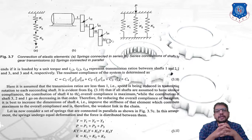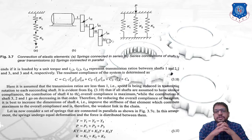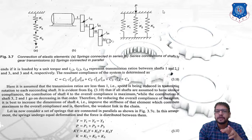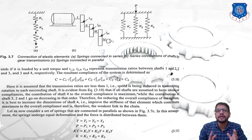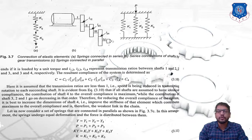Now let's consider diagram C, which represents springs in a parallel connection. For a parallel connection, the deflection remains constant — that is, the deflection for all three springs is the same — but the force is distributed among each spring. For spring 1 with stiffness k1 the force is p1, for spring 2 it is p2, and for spring 3 it is p3, while the deflection y is the same for all three.